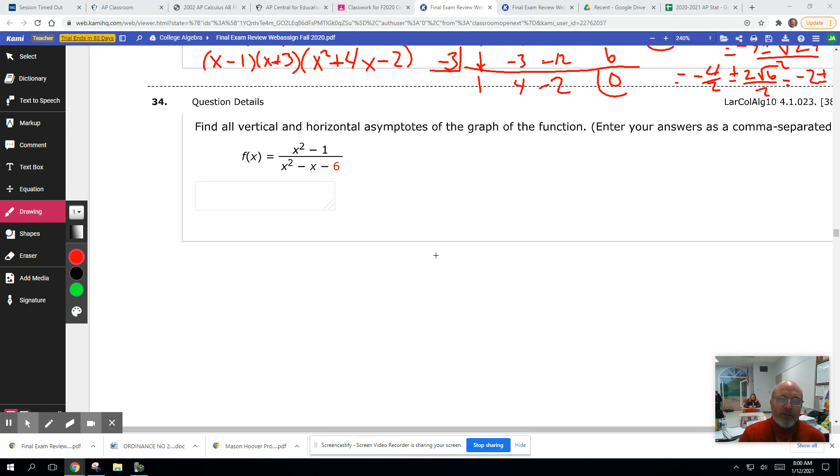All right. Vertical asymptotes occur when the denominator is 0 and the top is not 0. So you got something not equal to 0 over 0. To find those, we're going to set the denominator equal to 0.